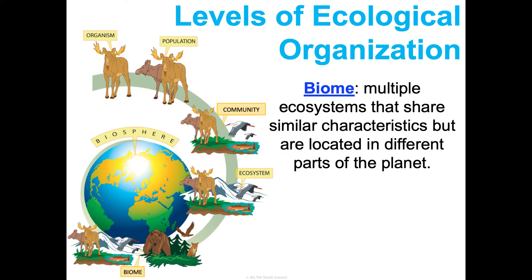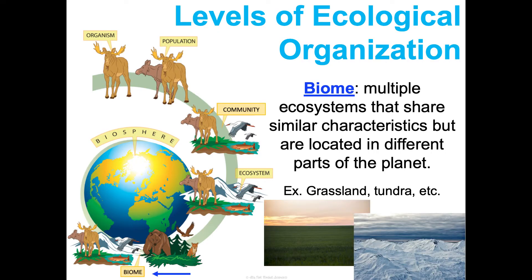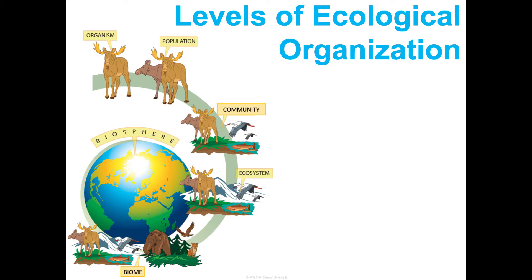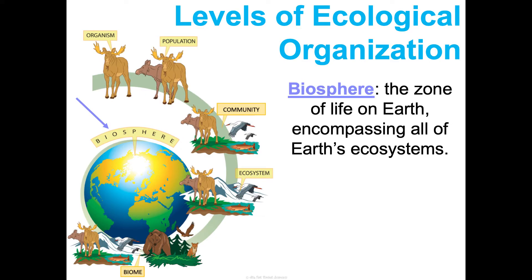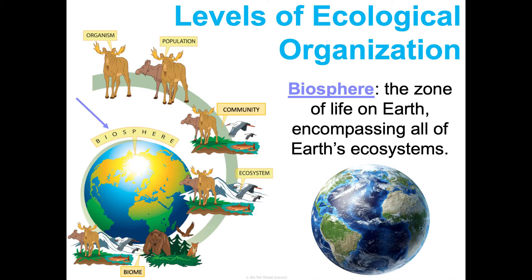We see similar ecosystems in different parts of the world, and those are referred to as biomes. A biome is multiple ecosystems that share similar characteristics but are in different parts of the planet. For example, there are grassland ecosystems with similar temperatures, precipitation levels, and organisms all over the world. Same with tundra — there's not just one tundra on Earth; there are lots of different areas that qualify as tundras. And the biosphere is the zone of life on Earth, encompassing all of Earth's ecosystems.